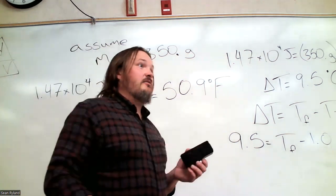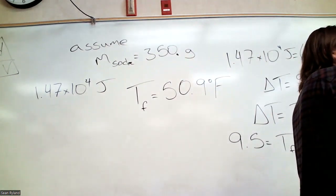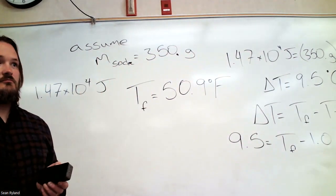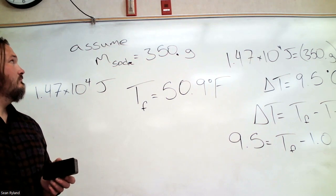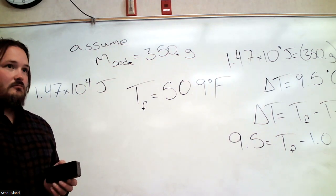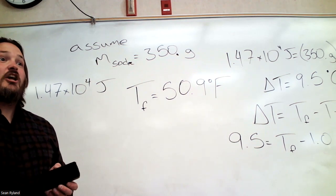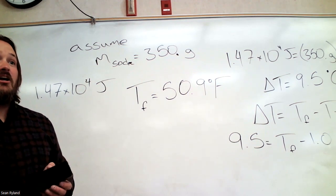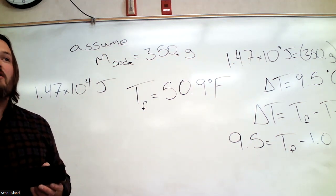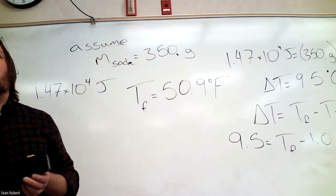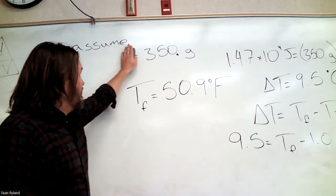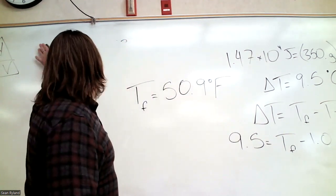As a general rule, you use Q = mcΔT most of the time, but not during a phase change. So in a phase change - or a chemical reaction - you don't have a delta T. And if delta T is zero, you can't use that equation. When there's a phase change, you're not going to use the Q equation.